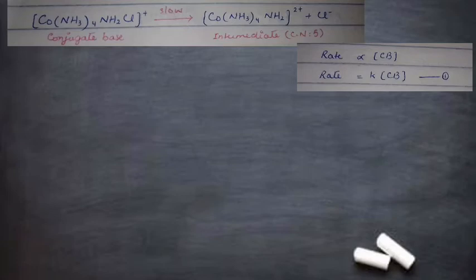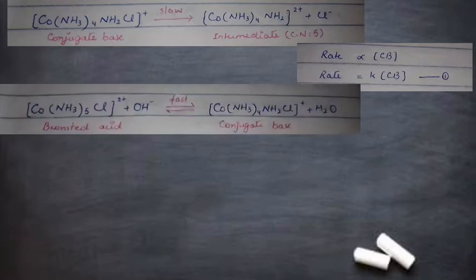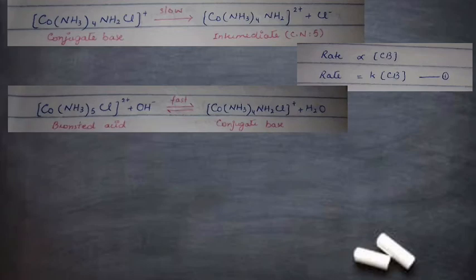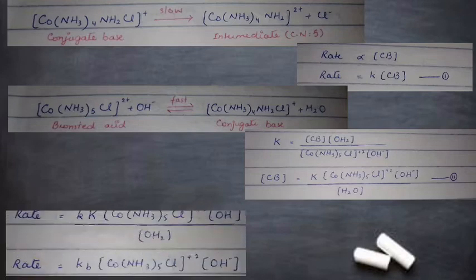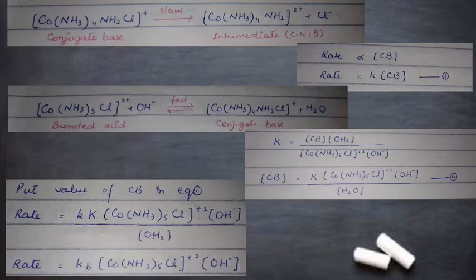In this equation, we substitute the value of the concentration of the conjugate base. The first step has an equilibrium constant K, written as K = [products] / [reactants]. Separating the concentration of the conjugate base and substituting into equation 1 gives: rate = k × K × [complex] × [OH⁻] / [OH₂]. We replace k × K / [OH₂] with K_B, which is the rate constant for base hydrolysis.